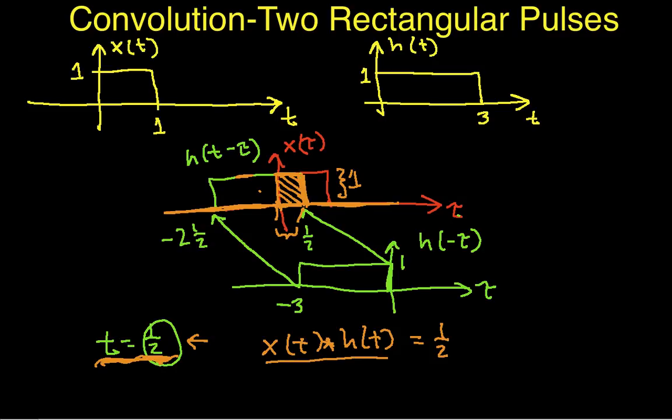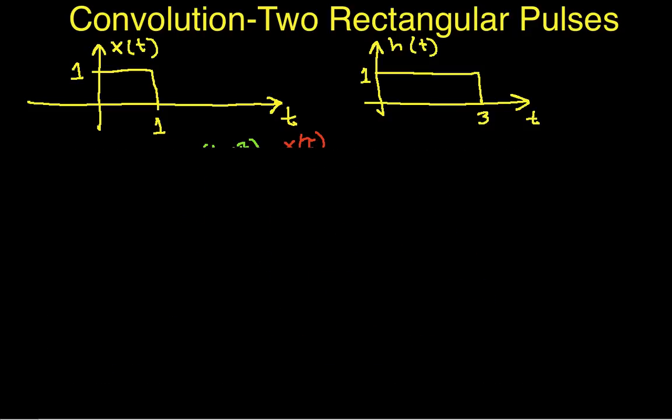So we'll redraw x of tau. Again, because we have a dummy variable of integration tau, it looks like this. So it goes out to 1 at a height of 1.